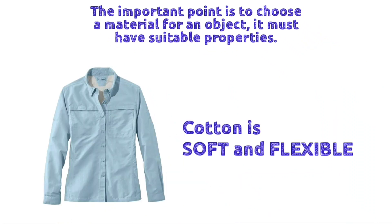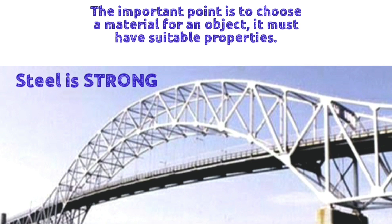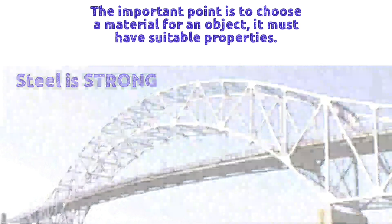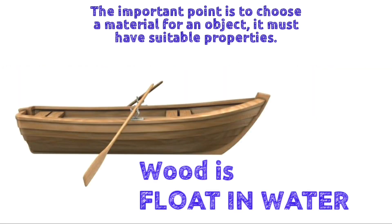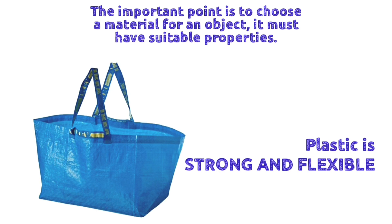For example: a shirt is made of cotton because cotton is soft and flexible; a bridge is made of steel because steel is strong; a boat is made of wood because wood floats in water; and a shopping bag is made of plastic because plastic is strong and flexible.